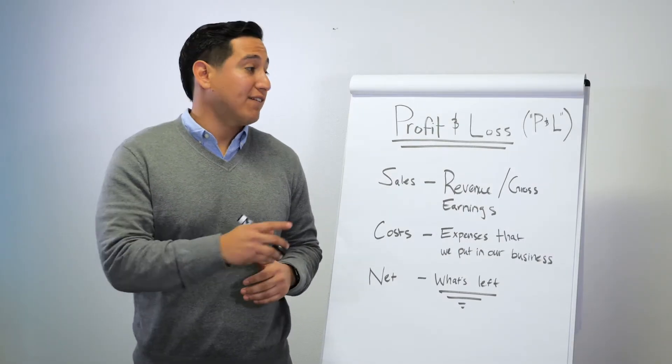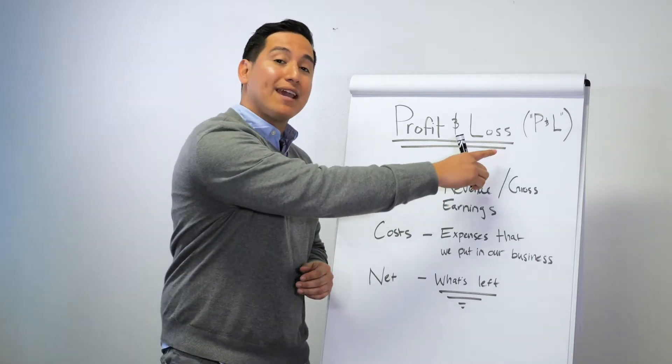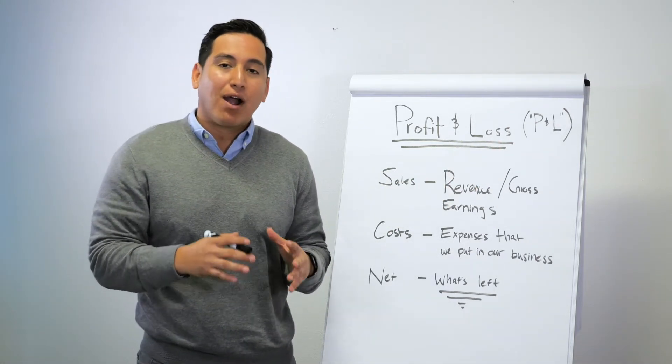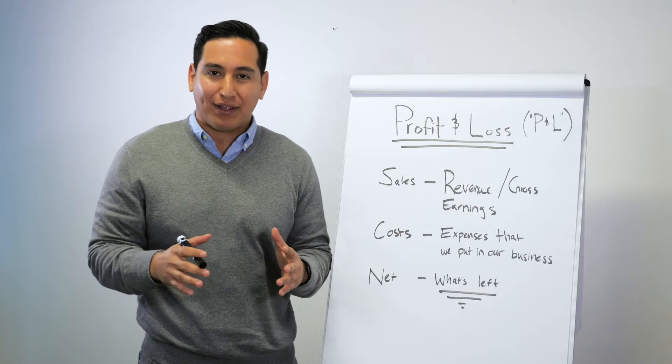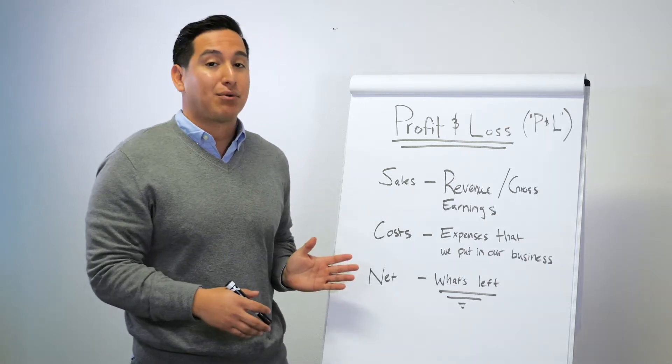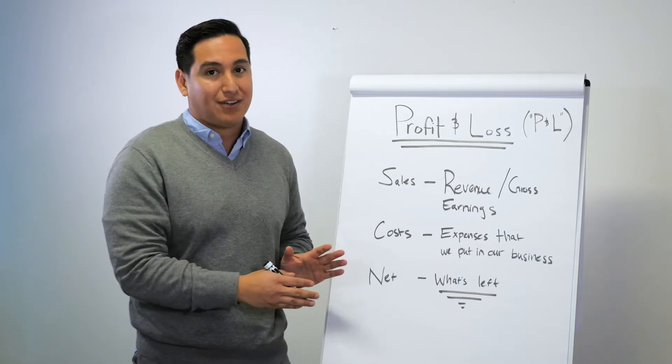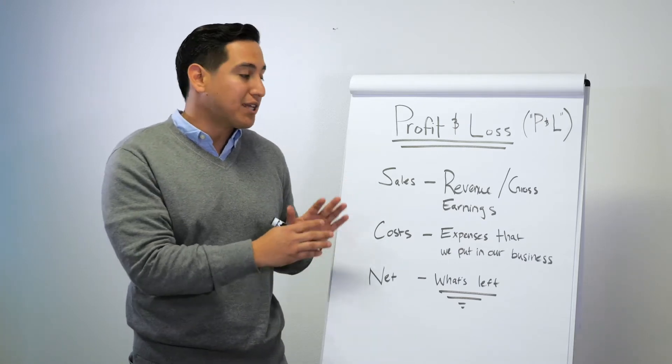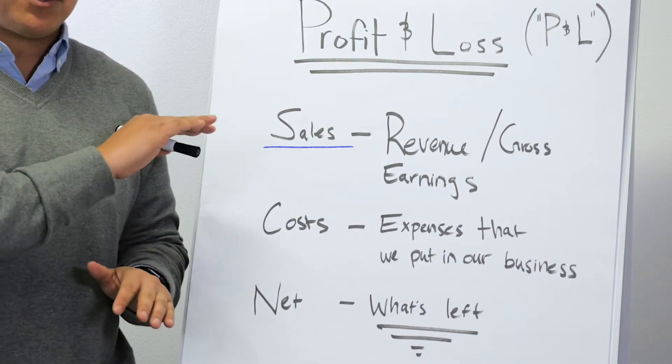Now we're going to talk about the profit and loss statement, or P&L as it's called. A profit and loss statement is very simple at the end of the day. It's going to contain three things which I have here on the board, and these can be further broken down. There's a longer conversation on each of these, but just to keep it simple, first we have sales.